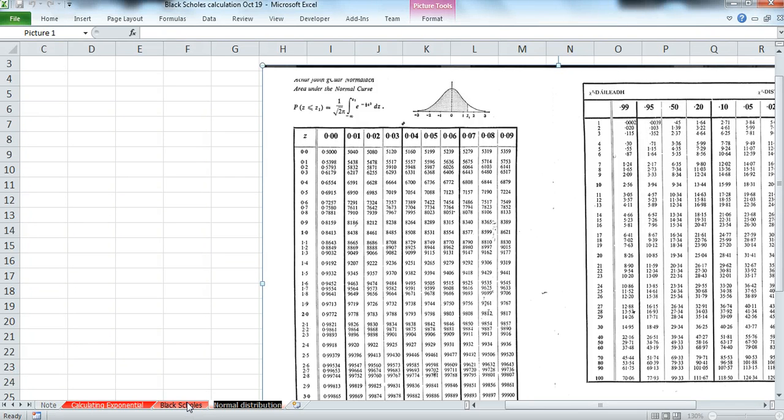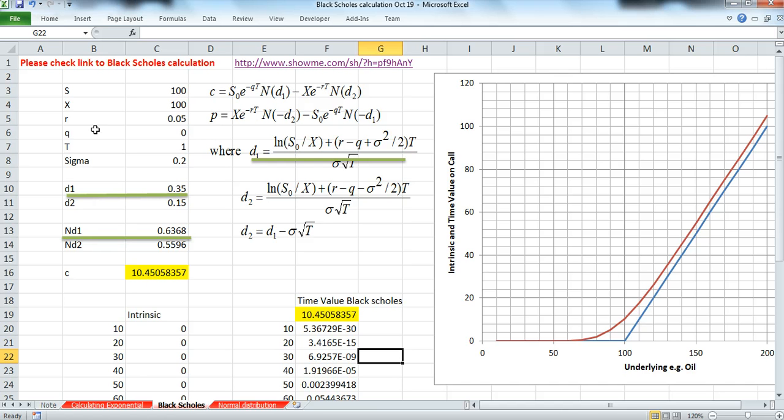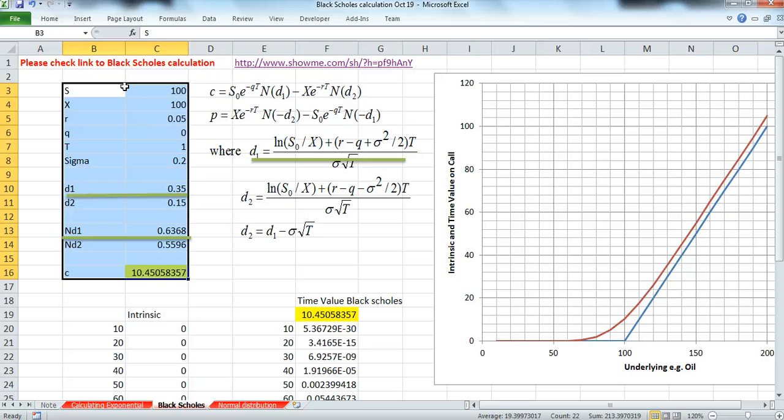Okay, so using the example given here, I want to just verify how I calculate md1 and md2 and how I would read these values d1 and d2 from the normal distribution tables.